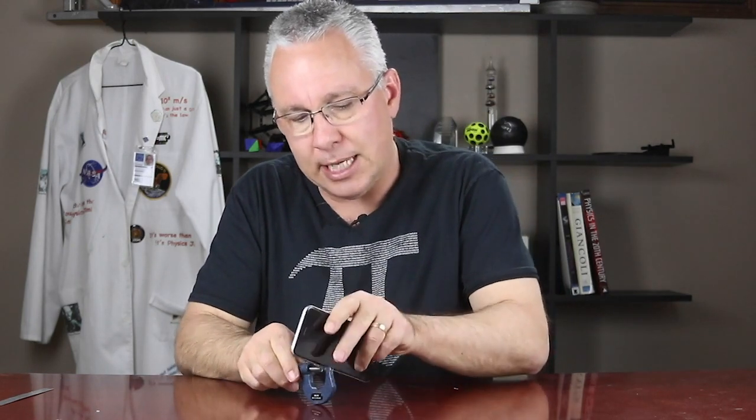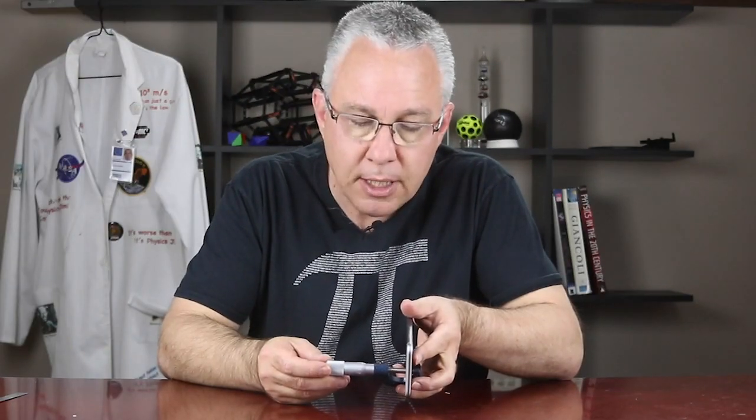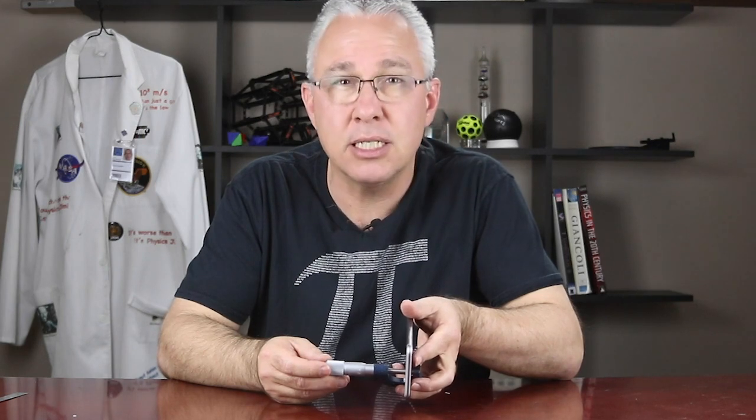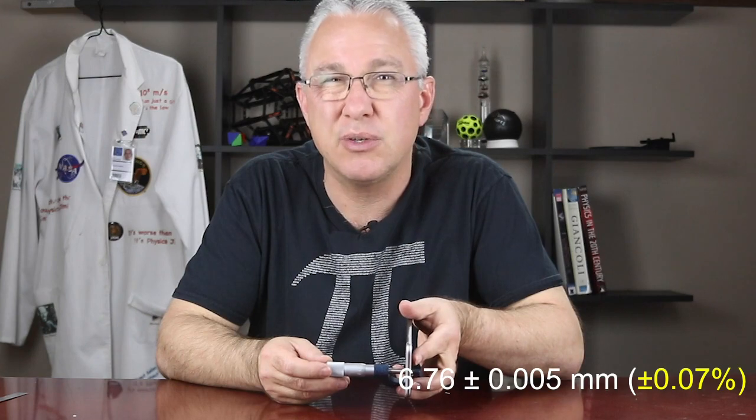Hi. Today I want to know what are the dimensions of this iPhone here. I'm going to use a micrometer to measure the thickness — I place it in there, close it up, and I'm going to get a value of 6.76 millimeters plus or minus 0.005.